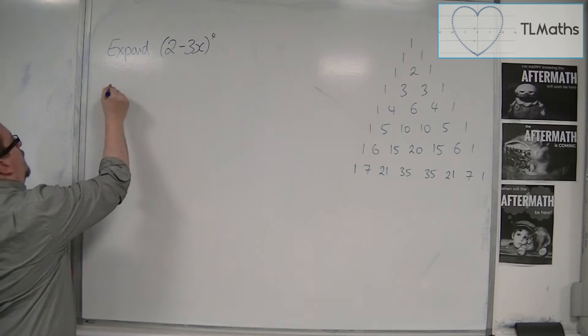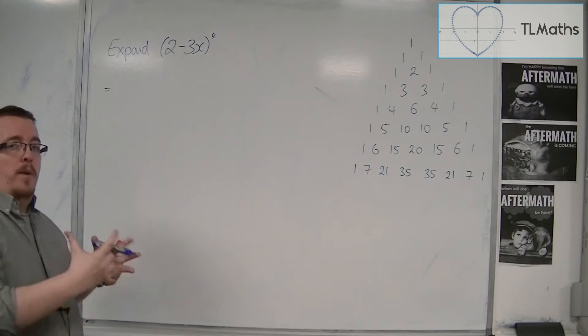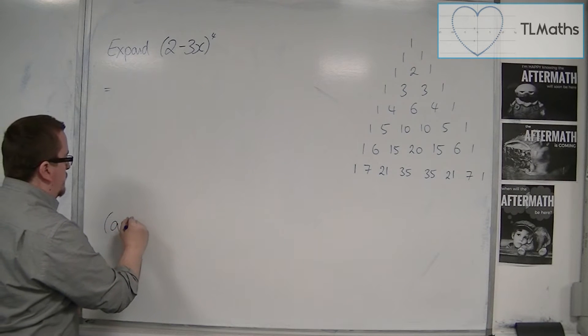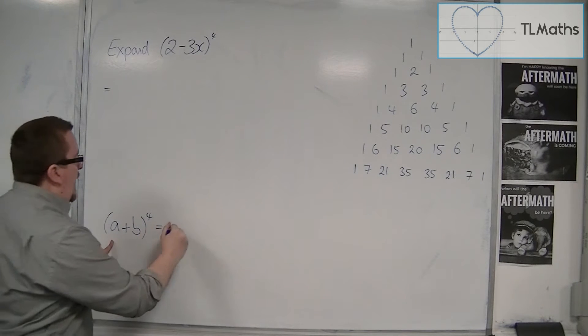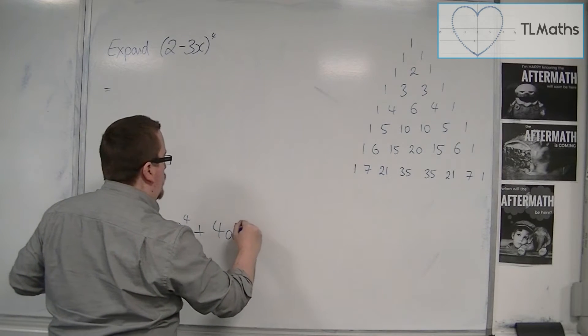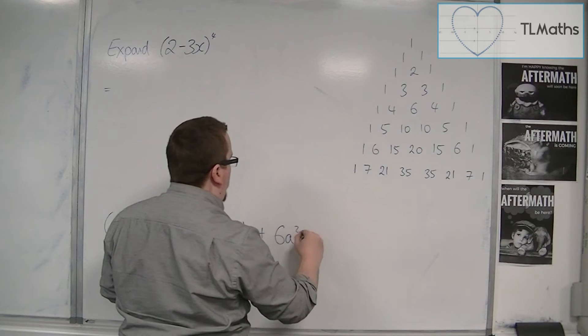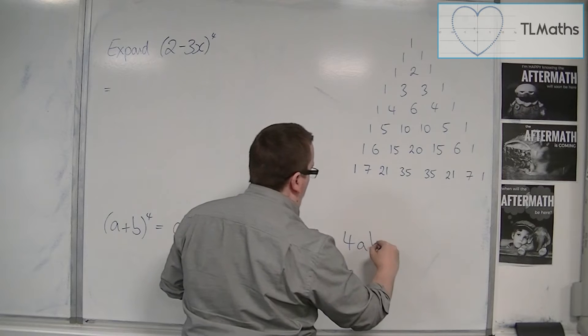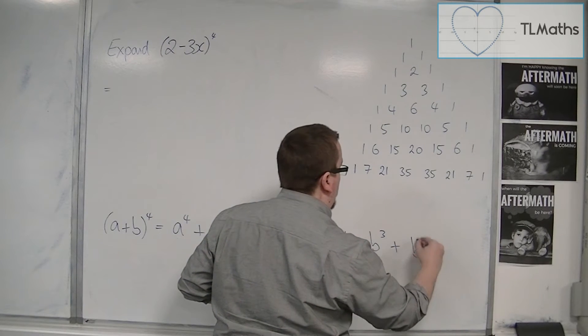So what we're going to start off with is if I had a plus b to the power of 4, what I get is a to the 4 plus 4, a reduces, b increases, 6, a reduces, b increases, 4, a reduces, b increases, and then b to the power of 4.